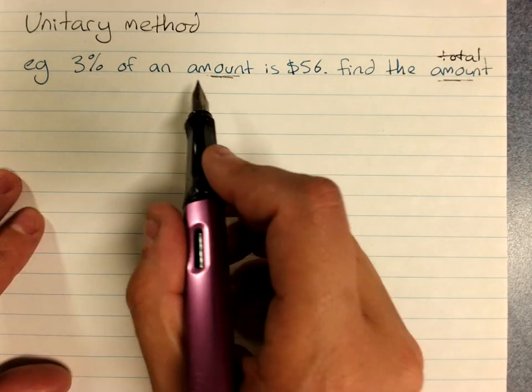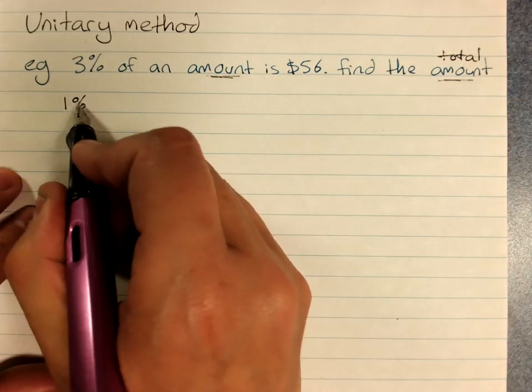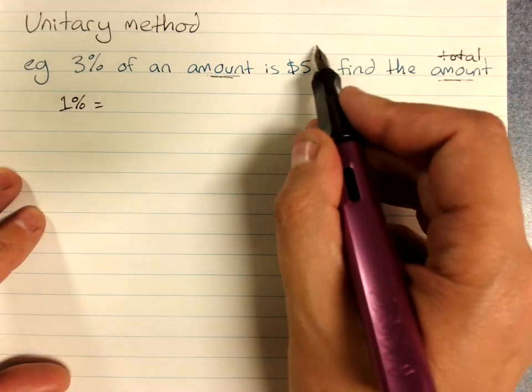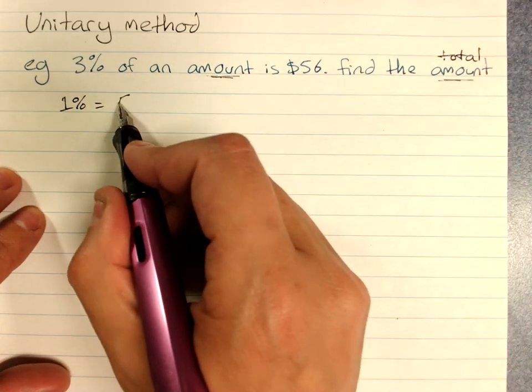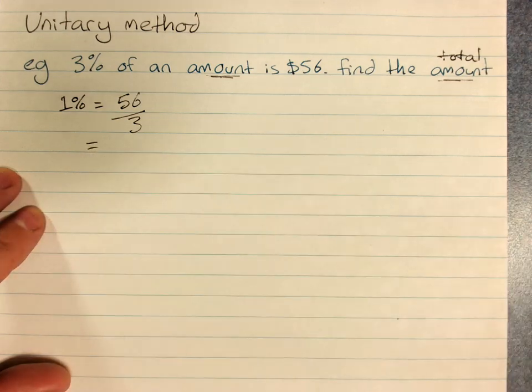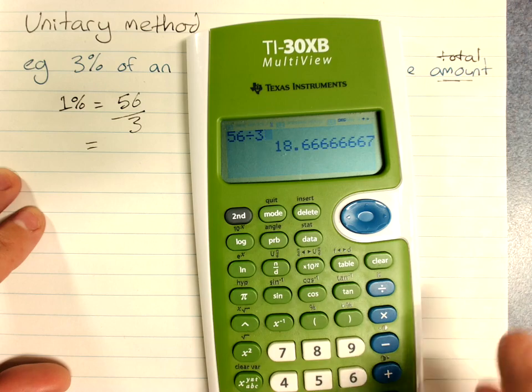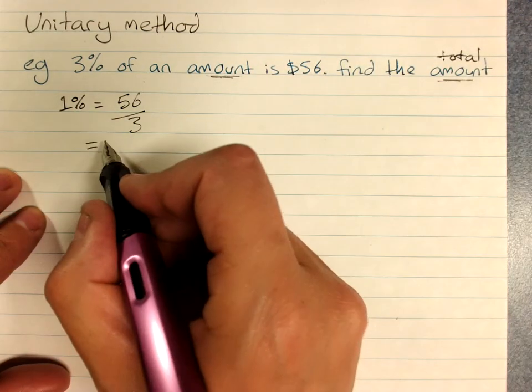If I've got 3%, in this case, we start by finding 1%. Take this amount that I've got, divide it by 3 to find 1%. Use your calculator if you need to: 56 divided by 3 is 18.67.